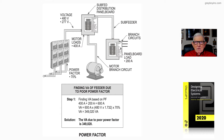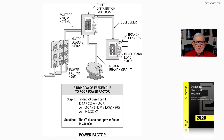To do the math, we would take 400 plus 200 amps — 600 amps — times 480 times the square root of 3, times 70 percent poor power factor. The VA is 349,020 volt-amps. Notice that's the solution: 349,020 volt-amps. Now, if it was 100 percent power factor instead of 70 percent, it would be 498,600 VA instead of 349,020 volt-amps.